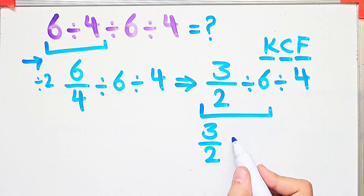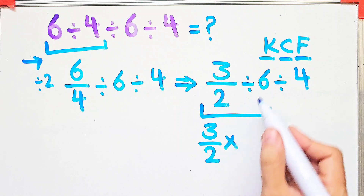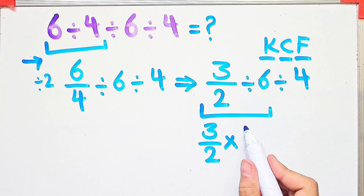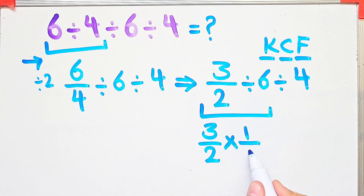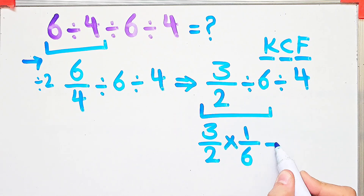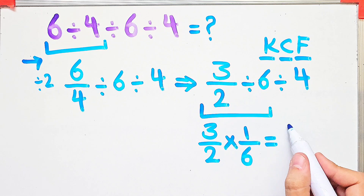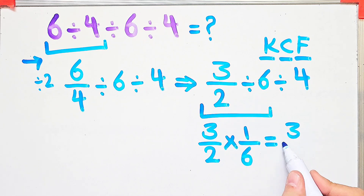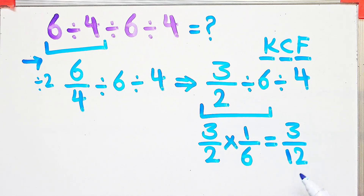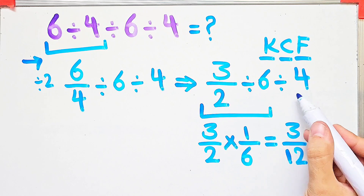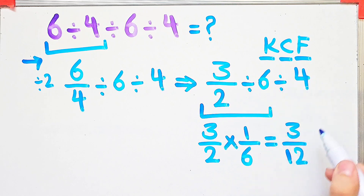we change the sign, and after that we flip the second number. Now we have a new expression and we do the multiplication. Three times one equals three, and two times six equals twelve. We have three over twelve, then divided by four.